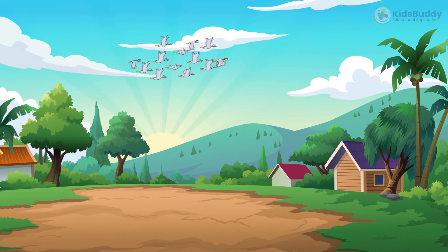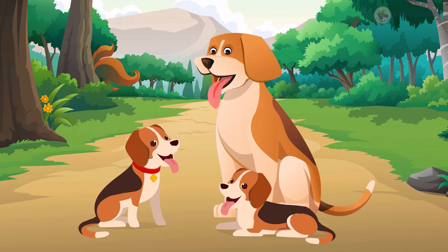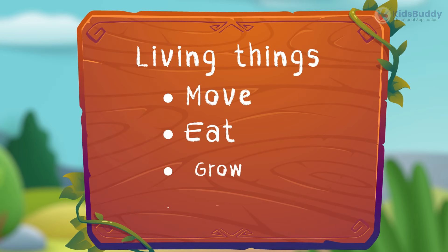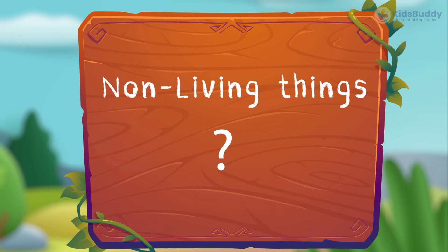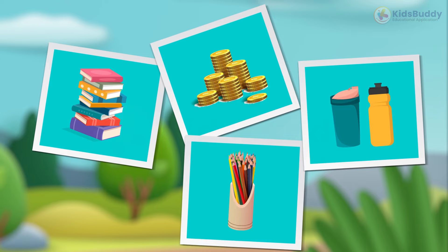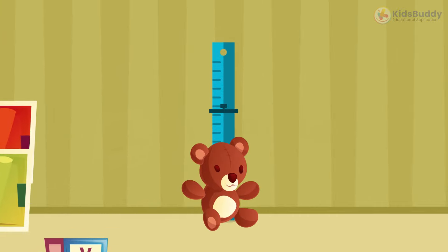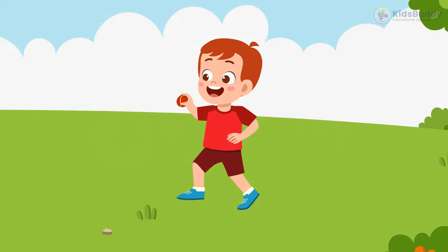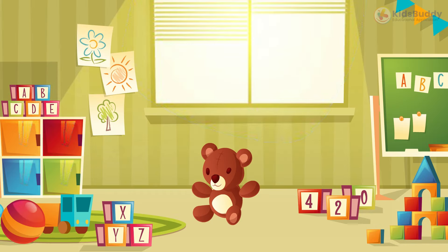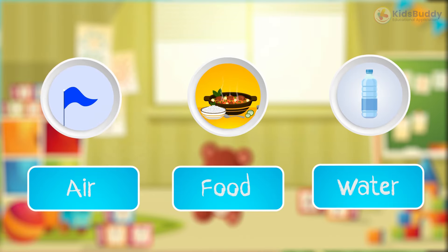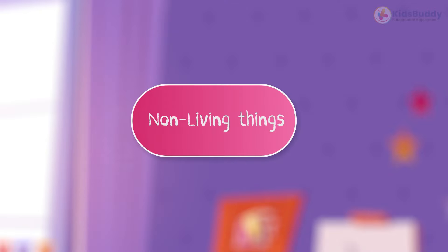Different animals live in different conditions — in the air, water, and land. If living things can move, eat, grow, and reproduce, then what makes a non-living thing? Well, the short answer is a non-living thing is entirely opposite to a living thing. This means anything that does not grow in size on its own, cannot move unless an external force is applied, does not need food, air, or water to survive, cannot reproduce, and has the superpower of immortality — these are classified as non-living things.